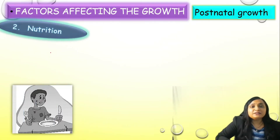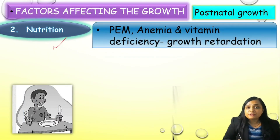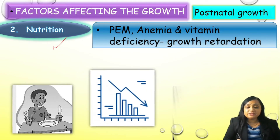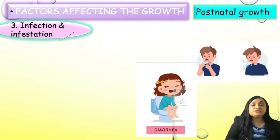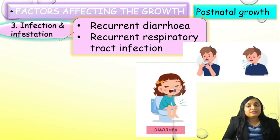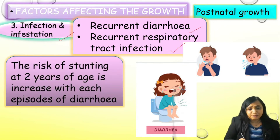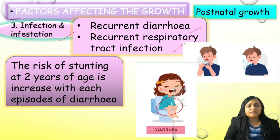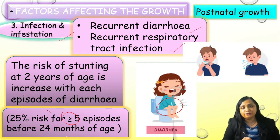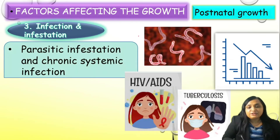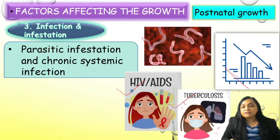The second important postnatal factor is nutrition. If the child receives good nutrition, good vitamins, then there will be good growth. If the child suffers recurrent diarrhea or recurrent respiratory tract infections, there could be growth failure, especially with diarrhea. There is a 25% risk of stunting at 2 years of age with more than 5 episodes of diarrhea before age 2. Parasitic infection, HIV, and tuberculosis also result in growth failure.